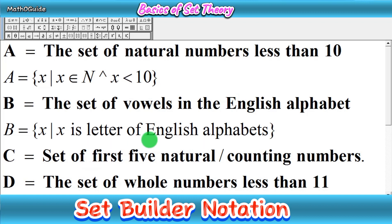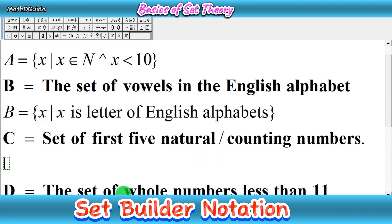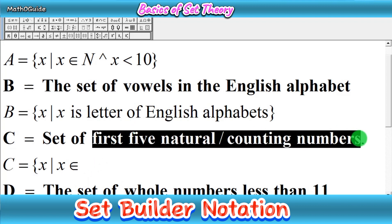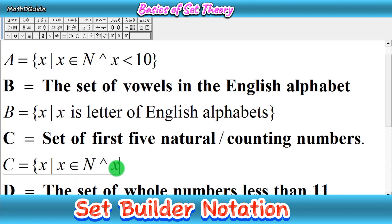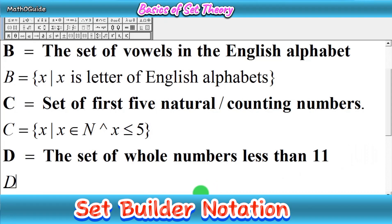Most students get confused because this is a bit different. Next we have set C. We use the same procedure. We have the first five natural numbers, so the type of set is natural numbers — write capital N. Then write the symbol 'and' followed by the limit. The first five natural numbers are 1, 2, 3, 4, 5, so you write less than or equal to 5. Then close the curly bracket.